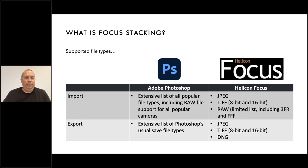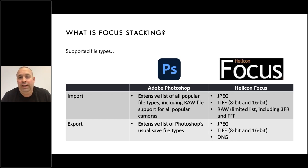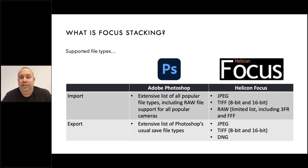Talking of file type support: Photoshop has a very extensive list of all popular file types, including raw file support for all popular cameras, and a very extensive list of common and not so common file types for export as well. Helicon is a little bit more limited. You can import as a JPEG, a TIFF either 8-bit or 16-bit, or as a raw file. It's a limited list, but it does include 3FR and FFF support.